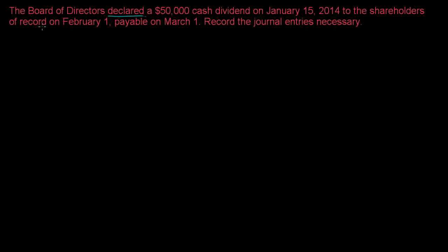The second date is called the date of record. This is the date where they actually pull the list of shareholders that are going to receive the dividend. Think about a publicly traded stock — the shares are constantly being traded, so at some point the company has to say: at the close of the stock market on, in this example, February 1st, we are going to pull the list of shareholders and these are the people who are going to receive the dividend.